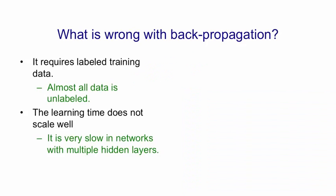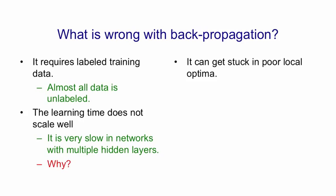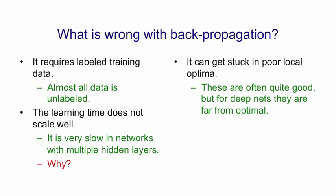A second problem is that for deep networks, the learning time does not scale well. When there are multiple hidden layers, the learning was very slow. We now know that one of the reasons was we did not initialize the weights in a sensible way. Yet another problem is that backpropagation can get stuck in poor local optima. These are often quite good, so backpropagation is useful. But we can now show that for deep nets, the local optima you get stuck in, if you start with small random weights, are typically far from optimal.